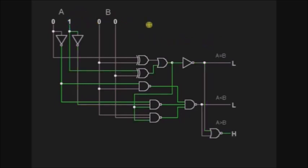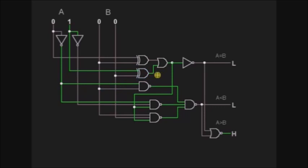Now I am changing the value of A. A is 1 and B is 0. We will check the output. In this condition A is greater than B, as A is 1 and B is 0. A1 is low, B1 is low, so the output of XOR is low. A2 is high and B2 is low, so the output of XOR is high, as one of the inputs is high. Any one of the inputs being high makes the OR gate output high. So we get a high signal, and the NOT of high is low — so A is not equal to B.